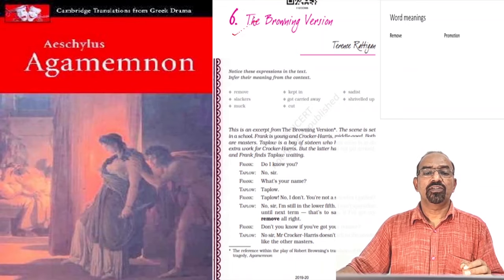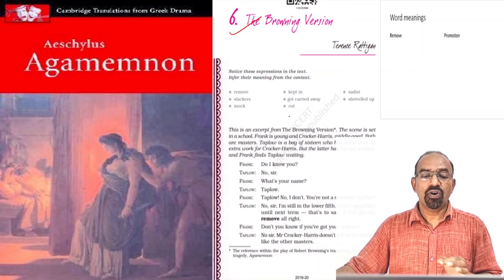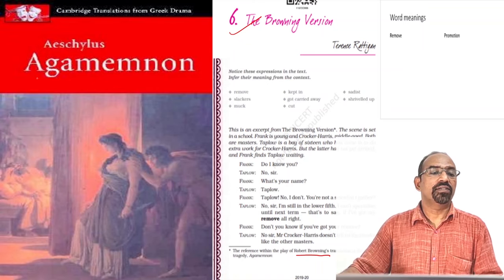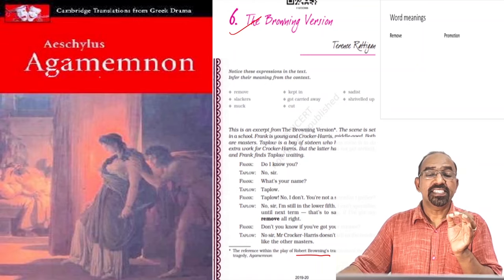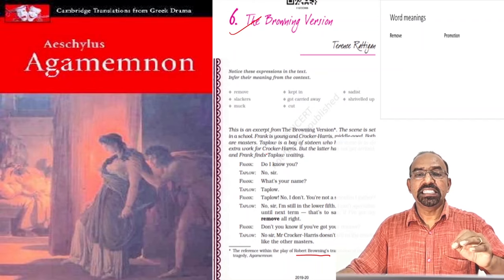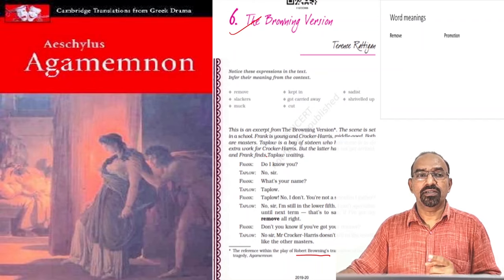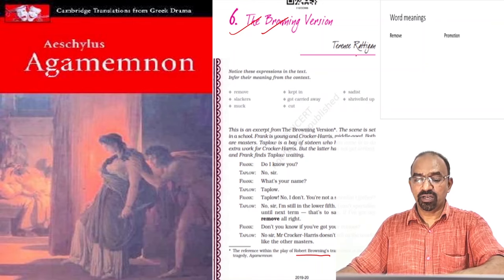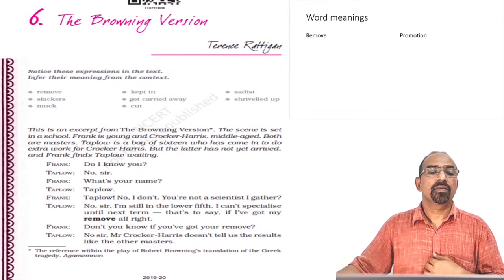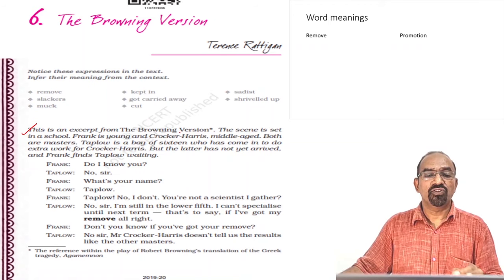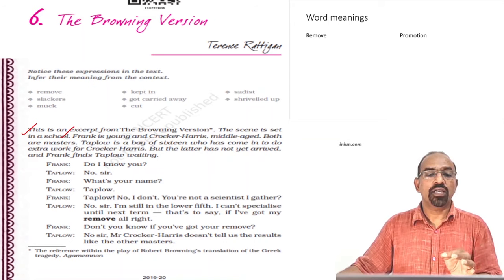The title 'Browning Version' means it is Robert Browning's translation of the Greek tragedy Agamemnon by Aeschylus. Robert Browning translated this Greek tragedy into English — that is the title used here, The Browning Version by Terence Rattigan. This is an excerpt from the Browning Version. The scene is set in a school.